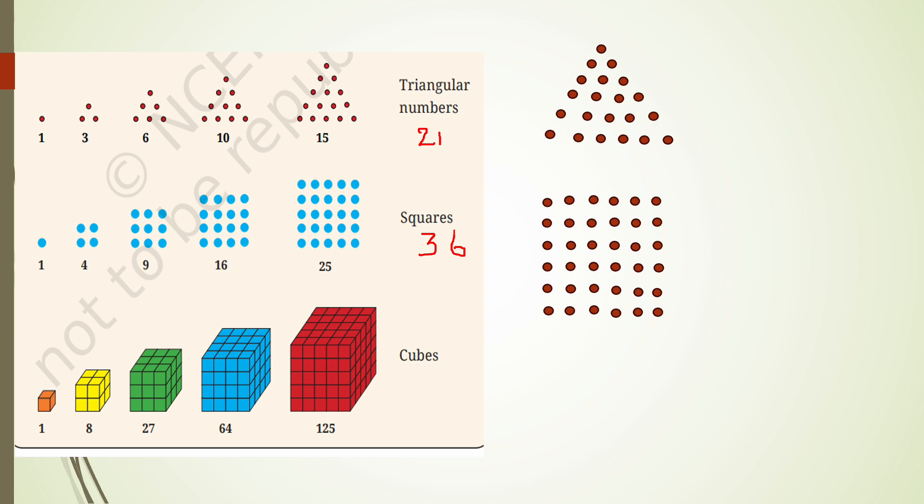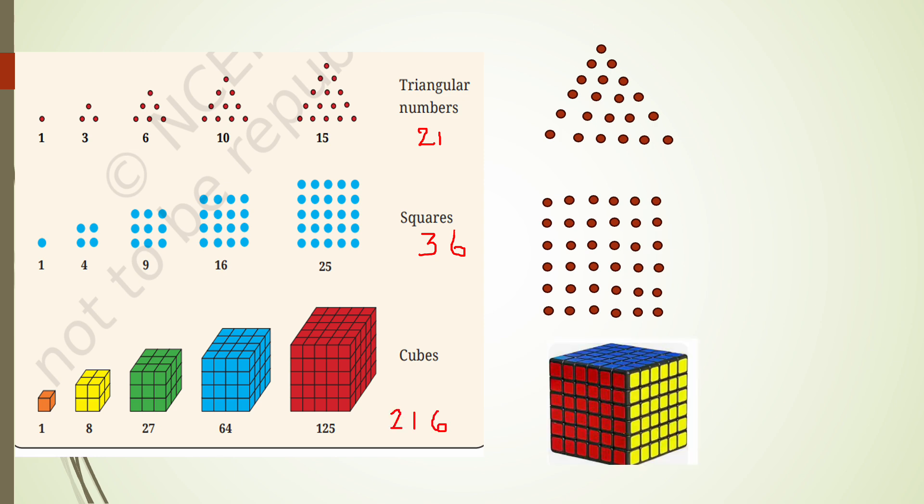For cubes — 1, 8, 27, 64, 125 — we have 1×1×1=1, 2×2×2=8, 3×3×3=27, 4×4×4=64, 5×5×5=125. Then 6×6×6=216. So the next cube number is 216, represented as a cube.